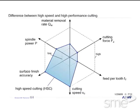High-speed cutting means cutting with an increased cutting speed, which leads to low cutting forces. By applying low feeds per tooth and low depth of cut, a very good surface roughness can be machined and improved form accuracy is possible.